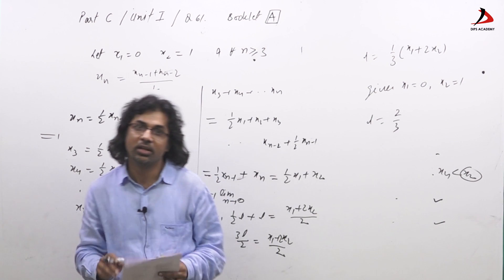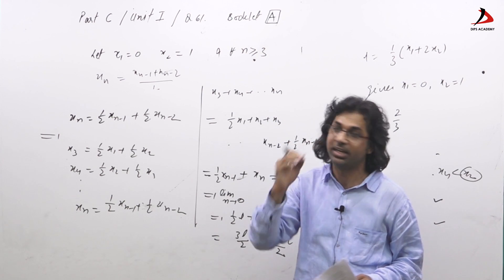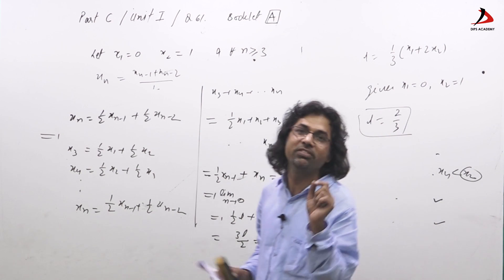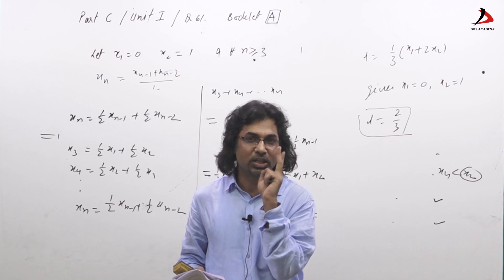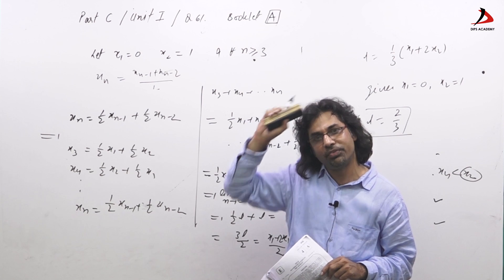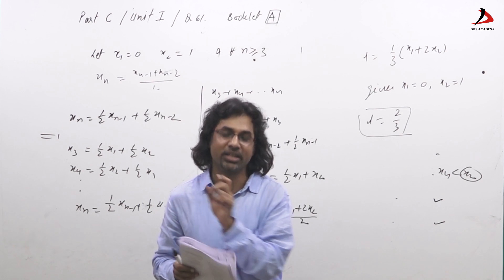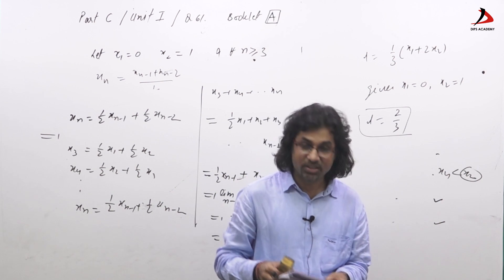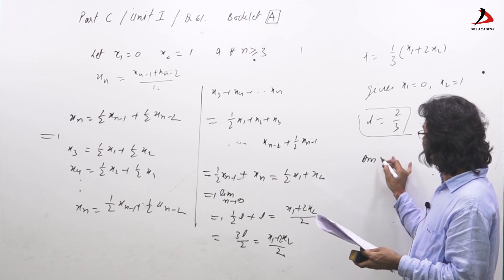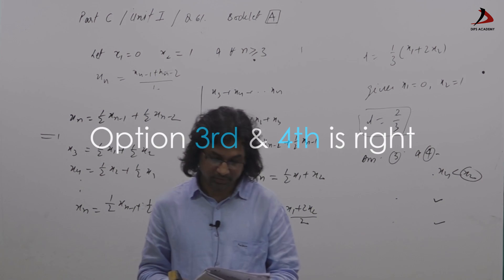In summary, a sequence was given by a recurrence relation and we determined its nature: it is not monotonic, it is convergent, and it is Cauchy. We proved convergence by showing the odd and even complementary subsequences are monotonic, bounded, and converge to the same limit. The limit equals 2/3, so the correct answers are options 3 and 4. Thank you, we will return with another question very soon.